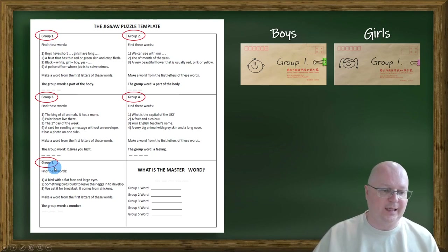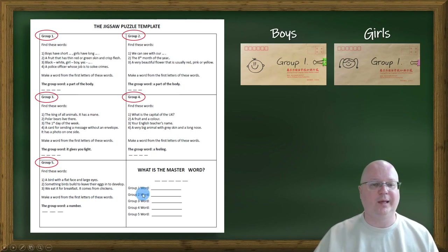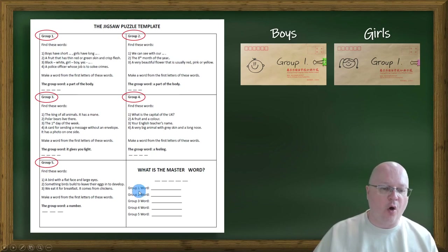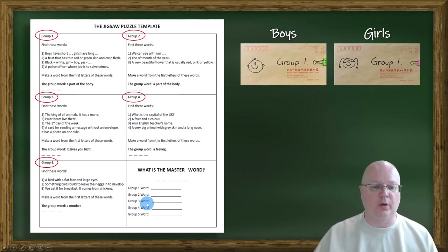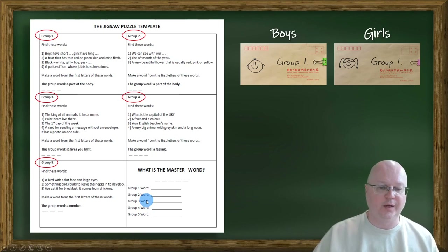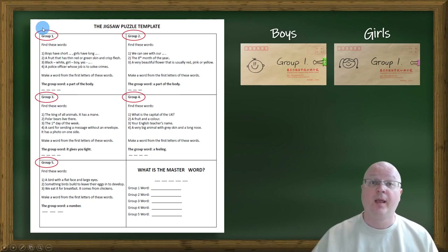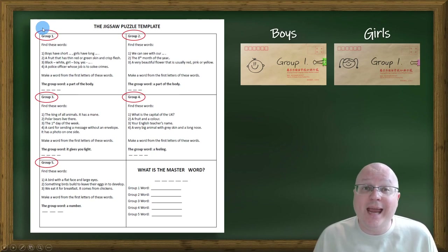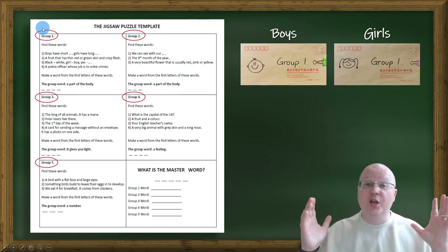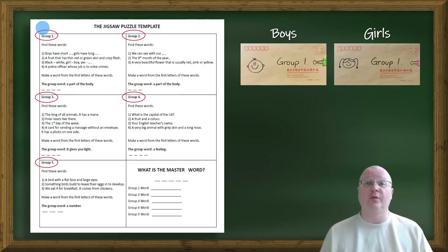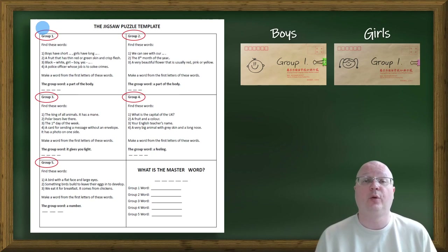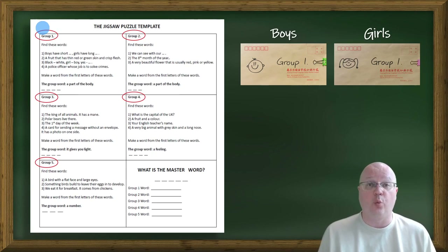The winning team is the team that has all six words including the master word written on the board. Are you with me yet? I know it sounds confusing but I'm going to give you examples and walk you through the whole thing.